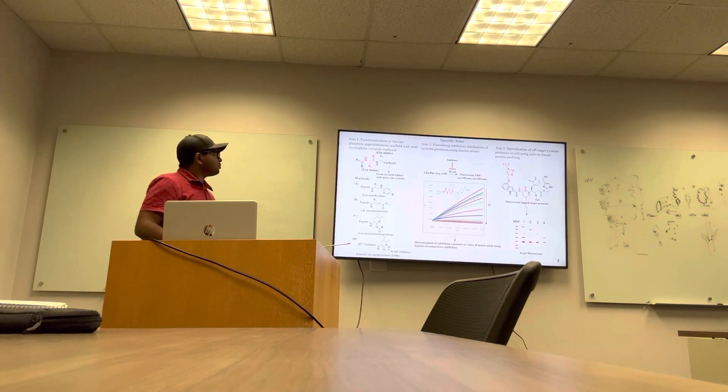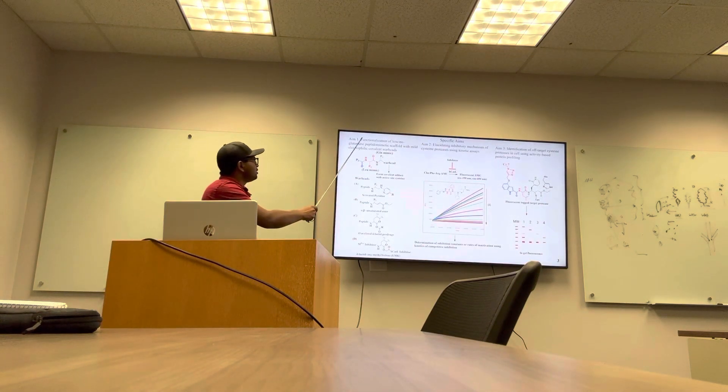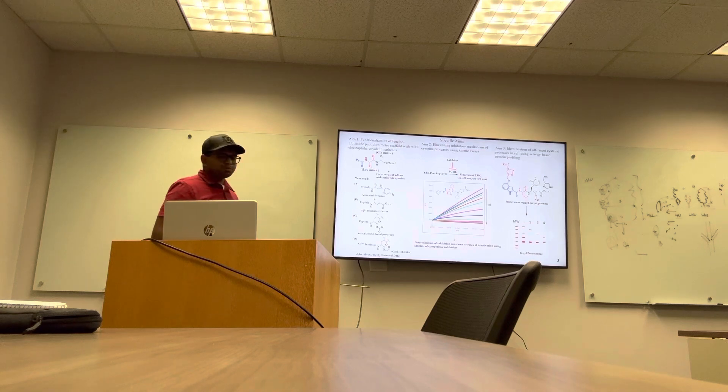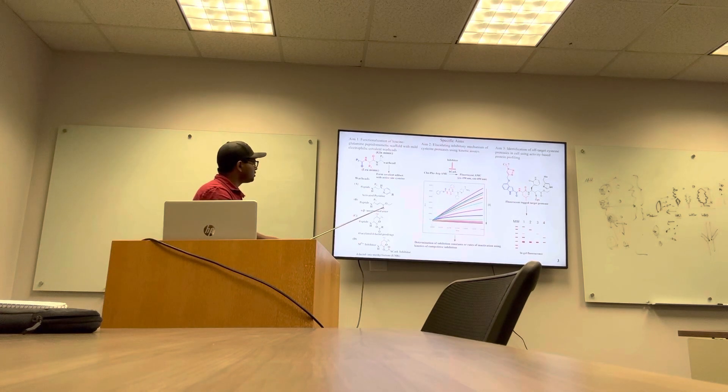There are three aims in this proposal. Aim one is to functionalize the leucine-glutamine peptidomimetics with mild electrophilic covalent warheads, which involves activated pyridines and alpha-beta unsaturated ester, acylated delta-lactol prodrugs, and delta-lactol oxymethyl ketones.